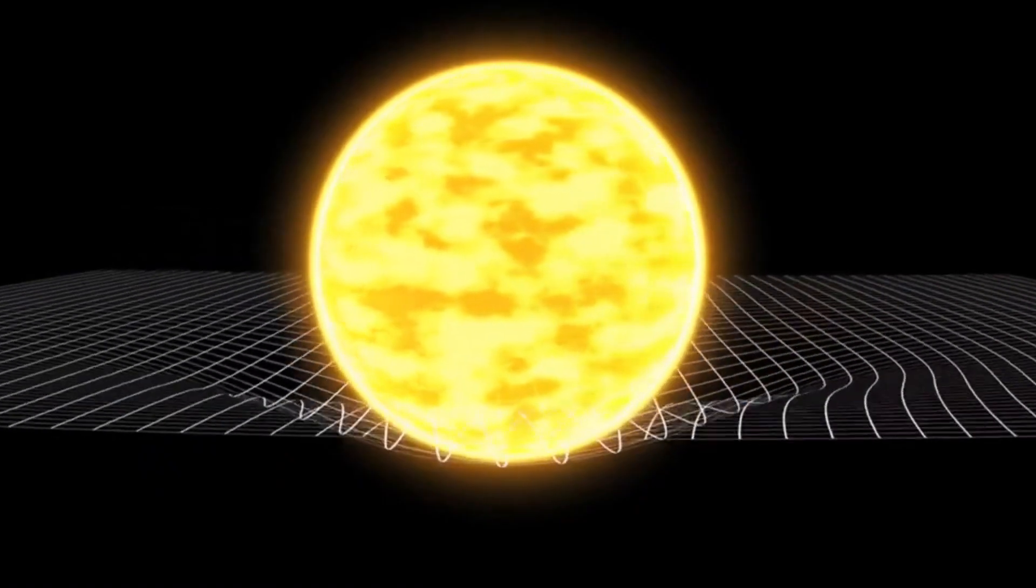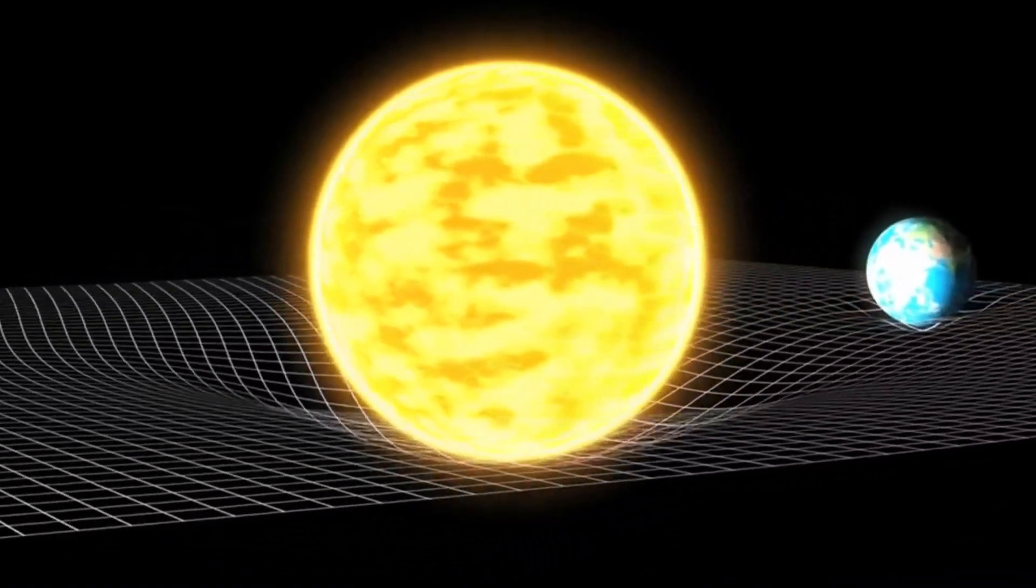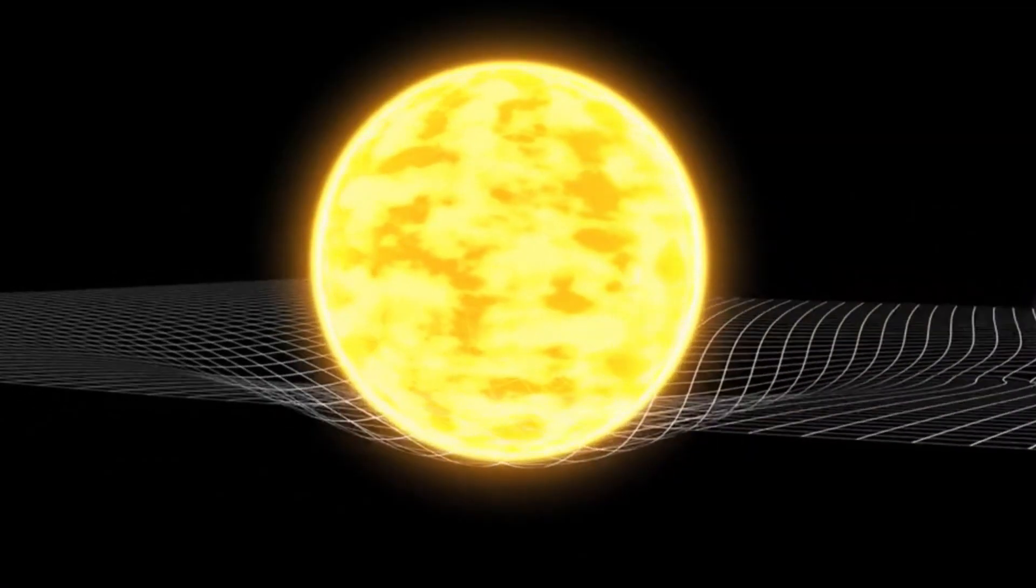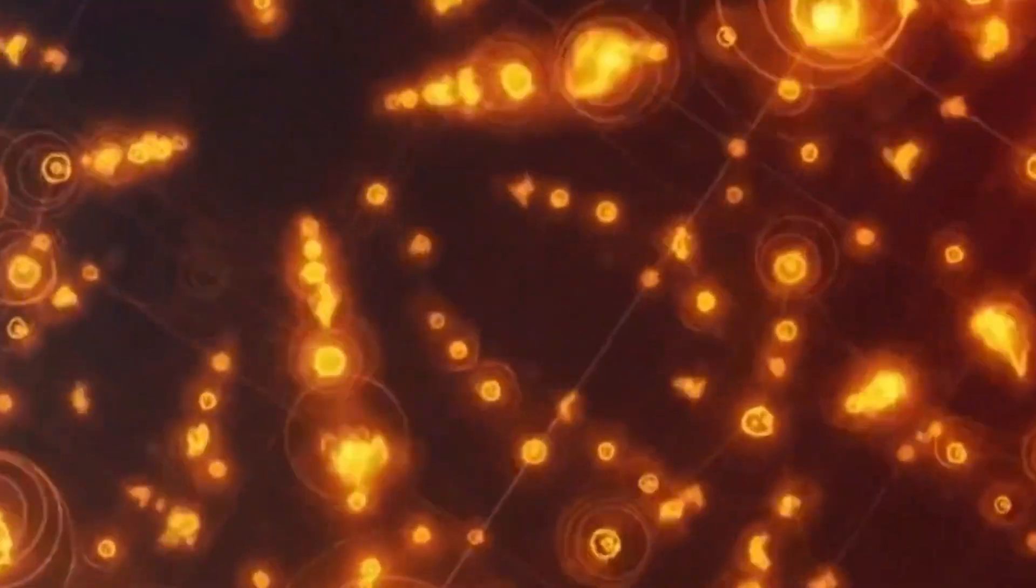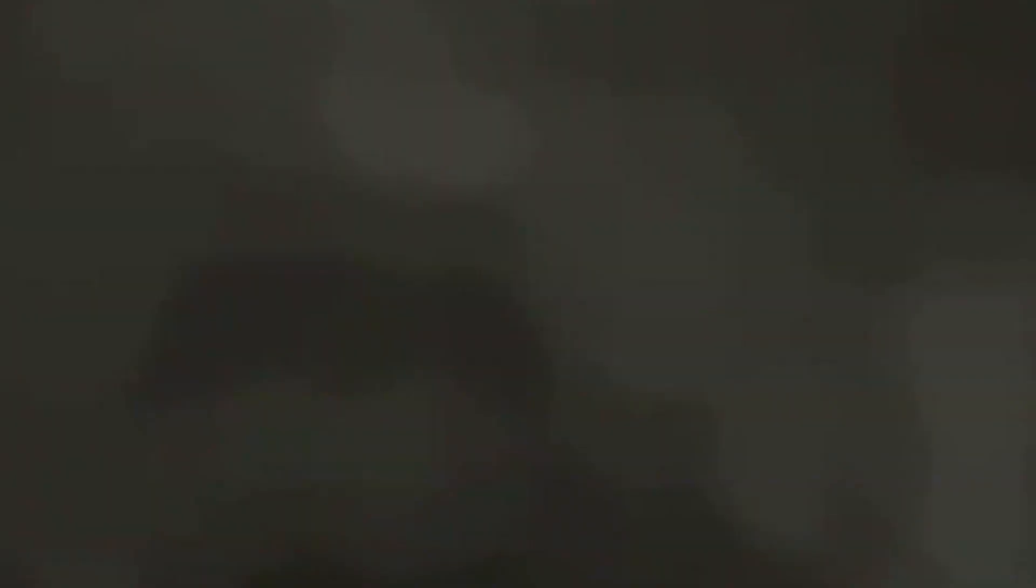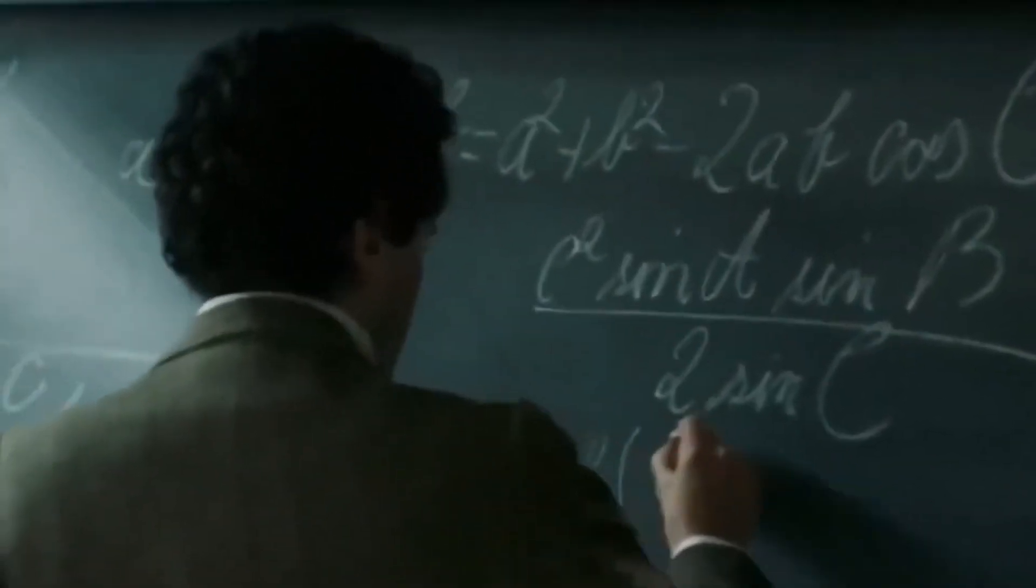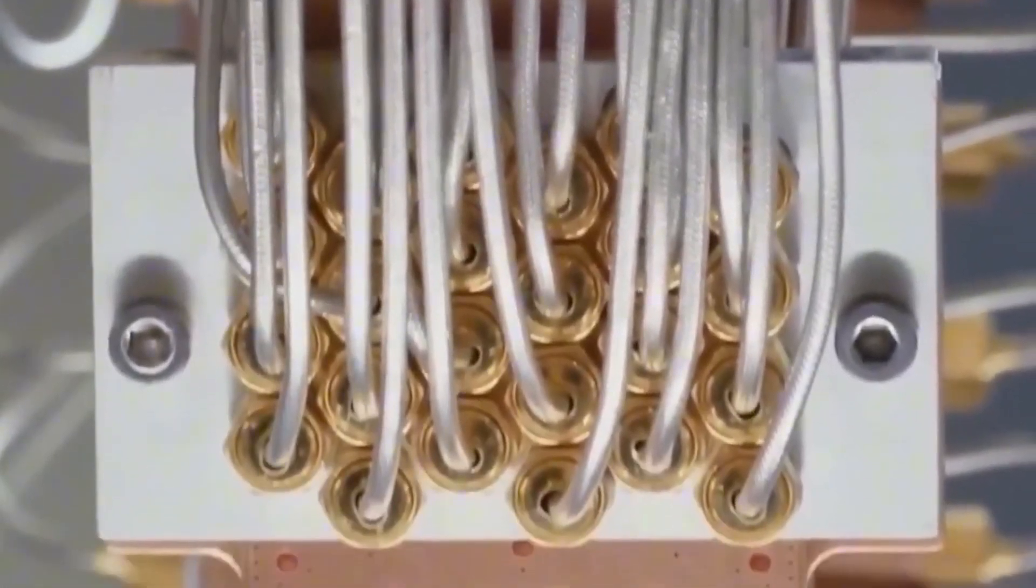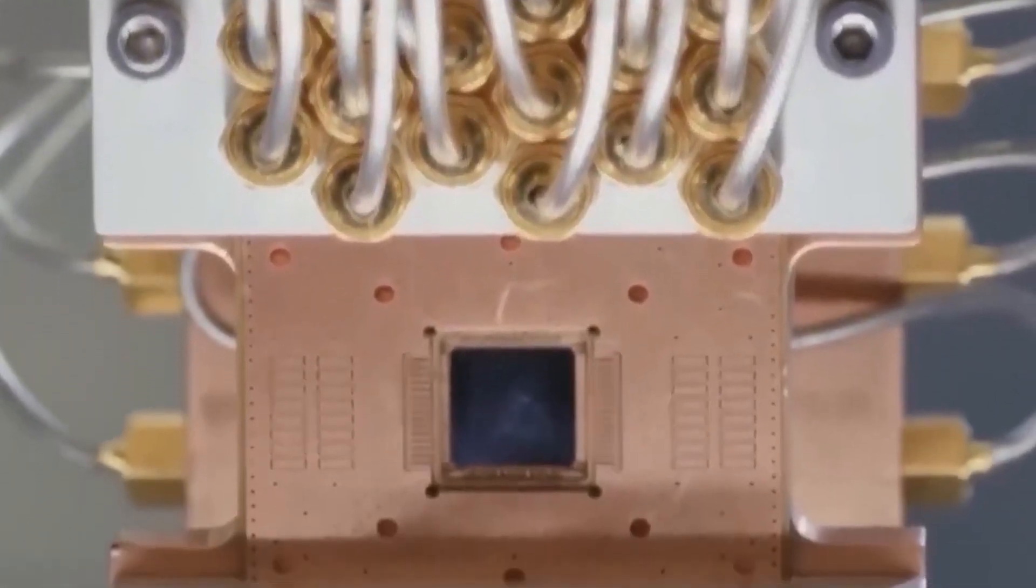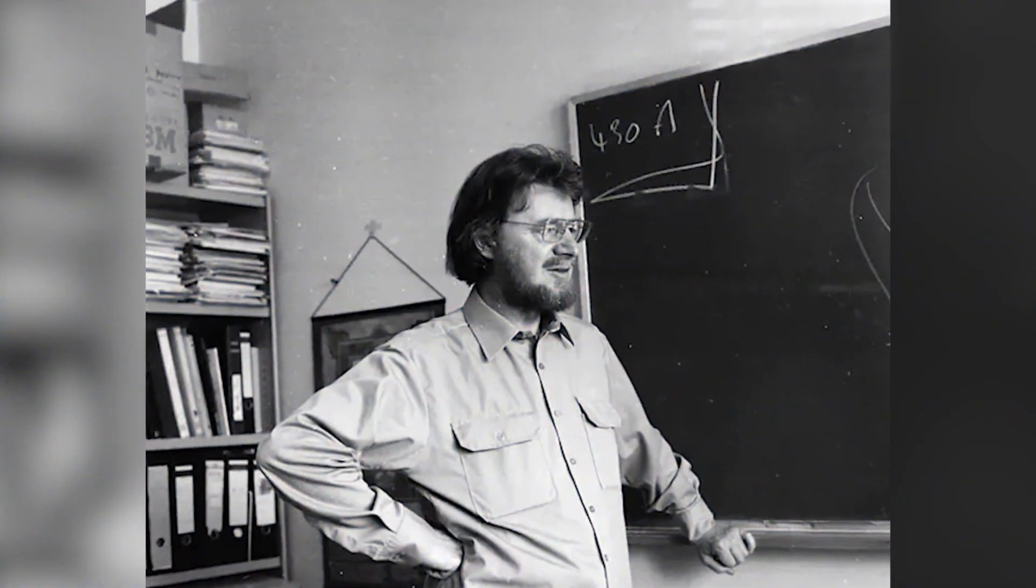These entangled particles seem to communicate instantly, even if they are separated by vast distances. To illustrate, let's imagine two photons created at the same time. If one photon is observed to have a particular polarization, the other photon will show the opposite polarization, regardless of whether it's on the other side of the universe. It's as if the two particles are connected in a way that bypasses the conventional limitations of space and time.